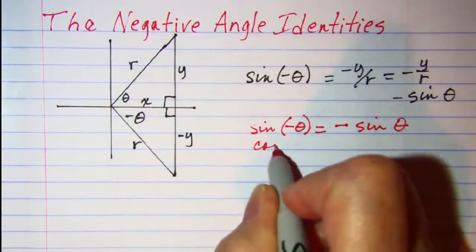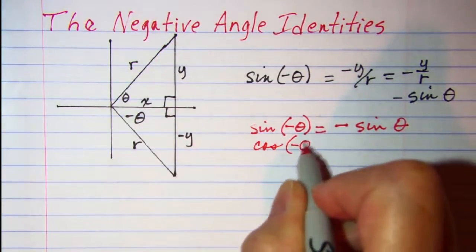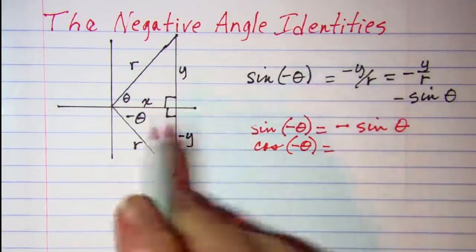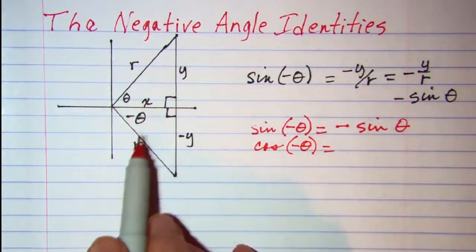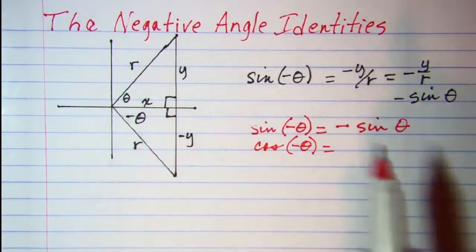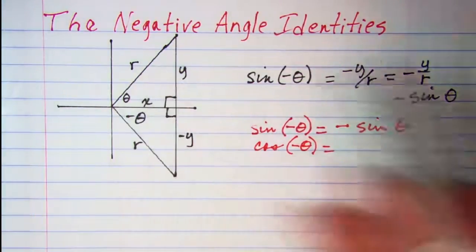When I talk about cosine of negative theta, that's x over r, which is the same as the cosine of a positive theta.